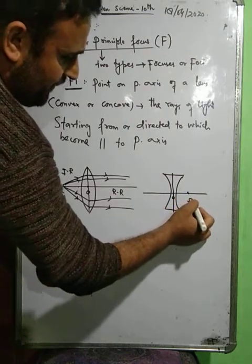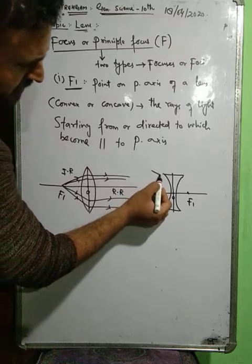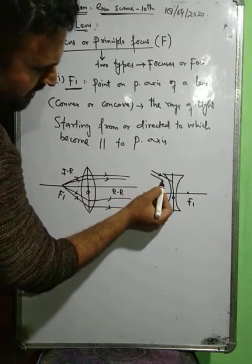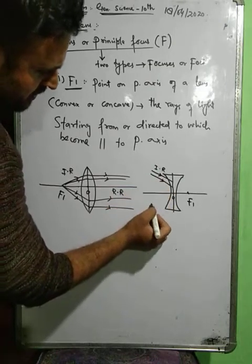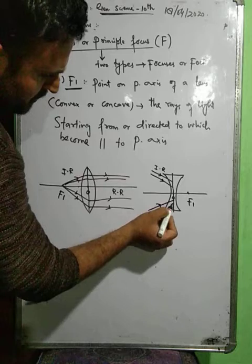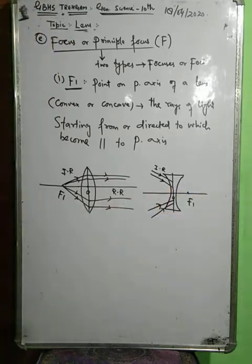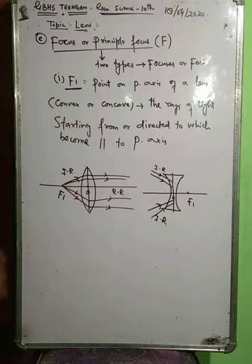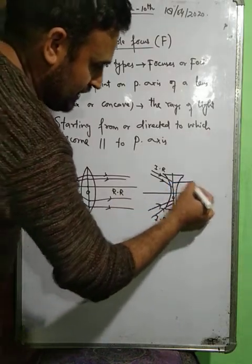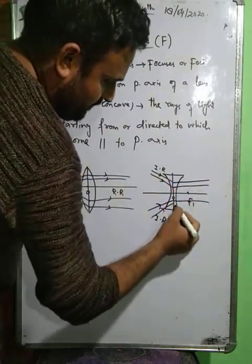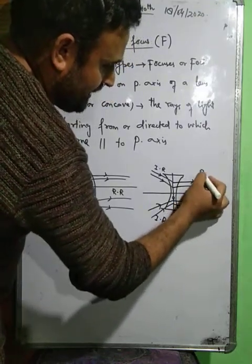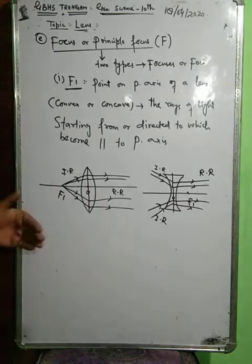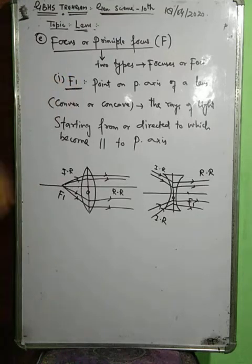Similarly, for a concave lens: if rays of light coming from any source fall on the concave lens directed towards F1, after refraction they undergo deviation and become parallel to the principal axis. This point is known as first focus F1.